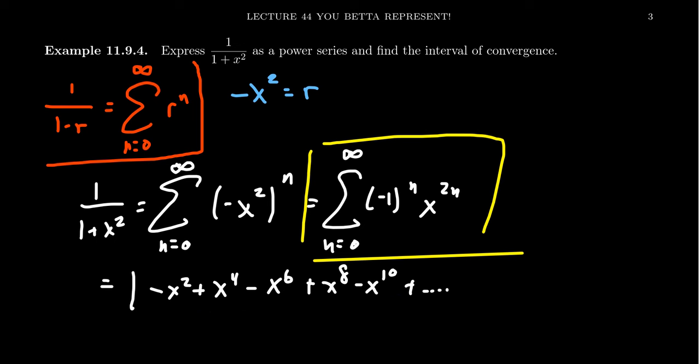But even still, we have to figure out where equality holds. Sometimes we use this equal sign very loosely with functions because there's these variables x. But equality can only happen when both sides are defined. The left hand side is defined for any real number x, but this geometric series is only defined for certain values of x, its interval of convergence.